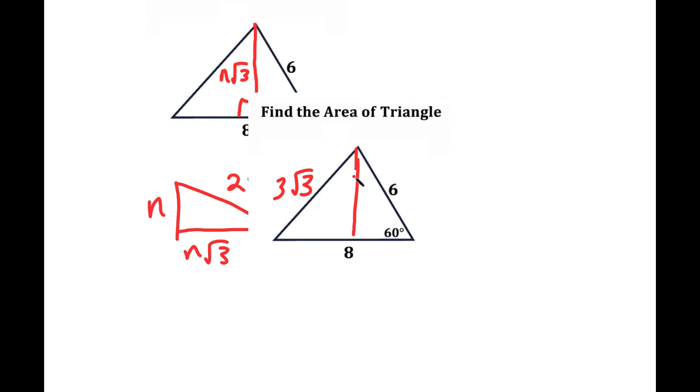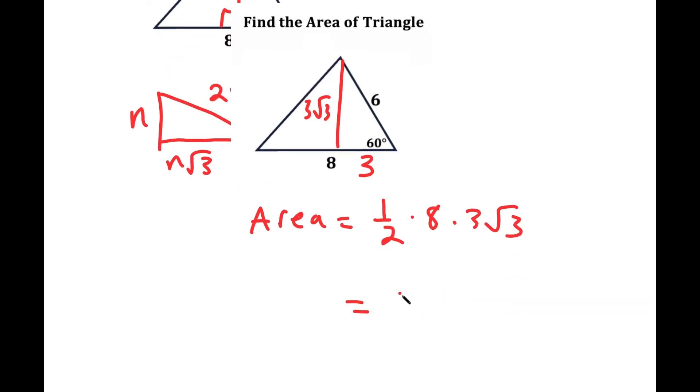And this side length, or sorry, this is 3 root 3, and this side length is 3. So now the total area is 1 half times 8 times the height, which is 1 half times 3 root 3, which is equal to 12 root 3. So this is my area. And those are my two methods.